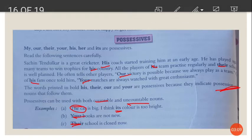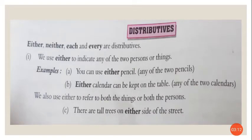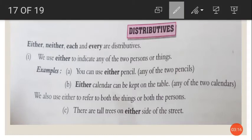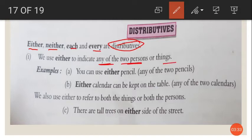Next is distributives. The words like either, neither, each, and every are called distributives. We use either to indicate any one of two persons or things. When we want to refer to any one from two, we use either.